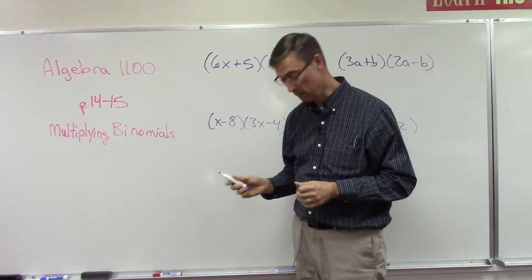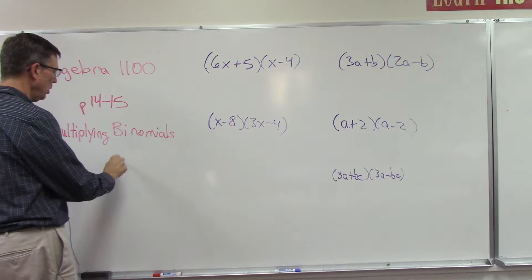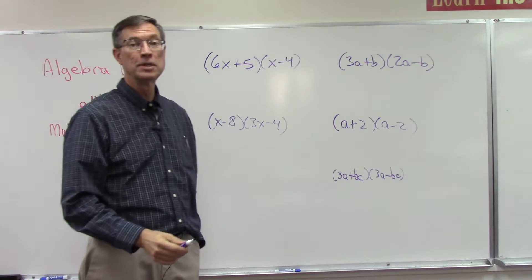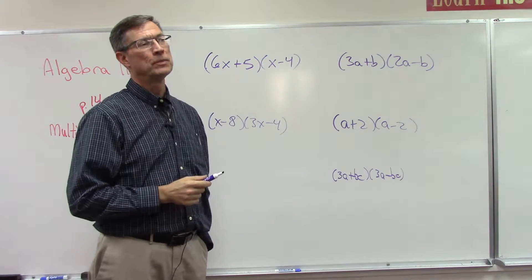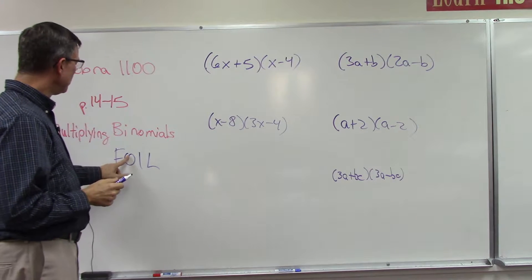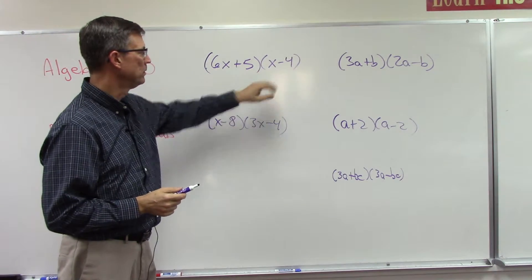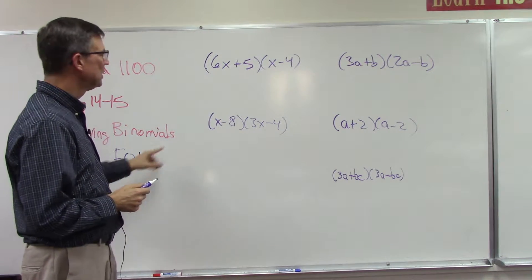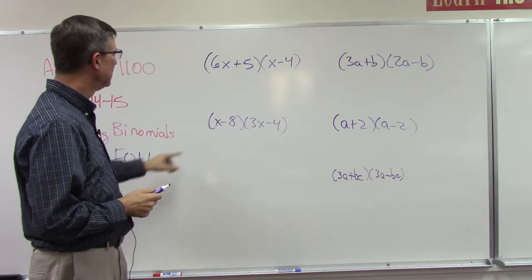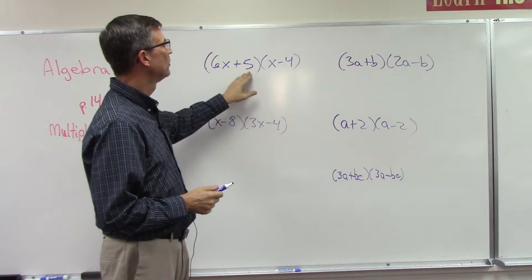The PACE does not refer to the FOIL method, but I always like to talk about and teach the FOIL method because it helps tie it into our brain if we have an acrostic like FOIL. The F tells us that we're going to multiply together the first terms. Then the O stands for the outer terms, I is the two inner terms, and then the L in FOIL stands for the last term.